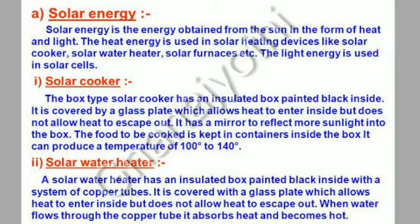The box-type solar cooker has an insulated box painted black inside. It is covered by a glass plate which allows heat to enter inside but does not allow heat to escape out. It has a mirror to reflect more sunlight into the box. The food to be cooked is kept in containers inside the box.